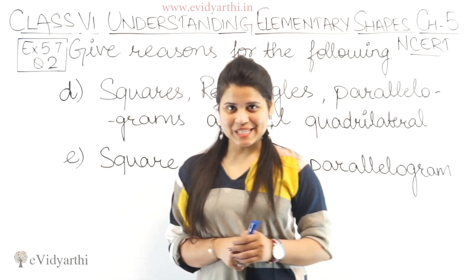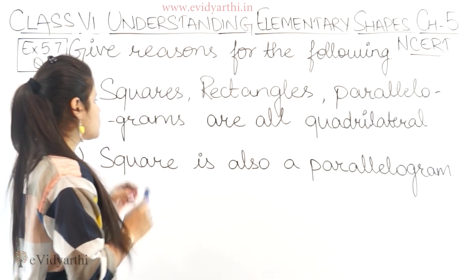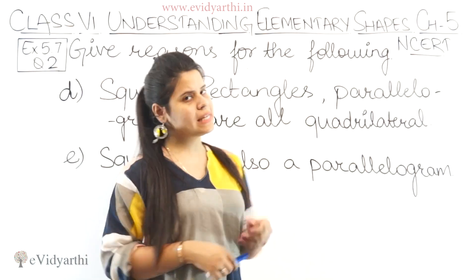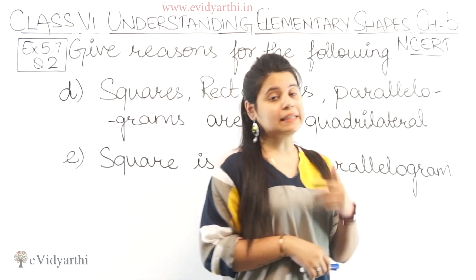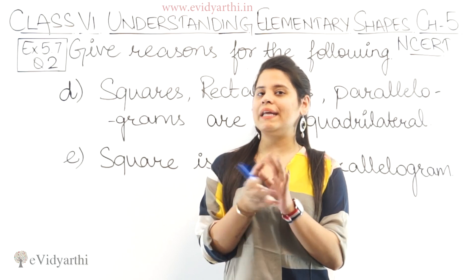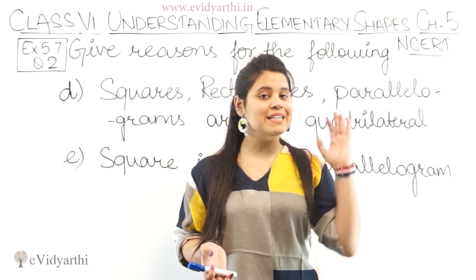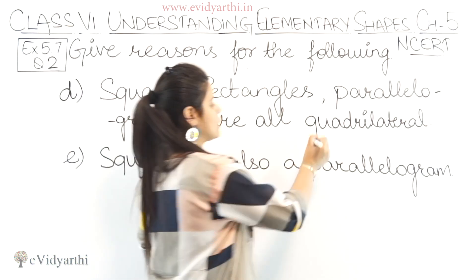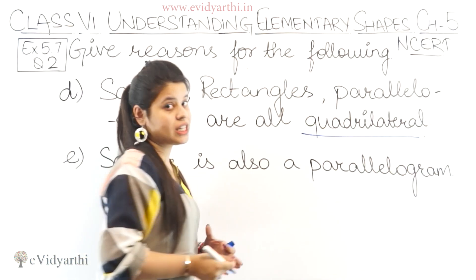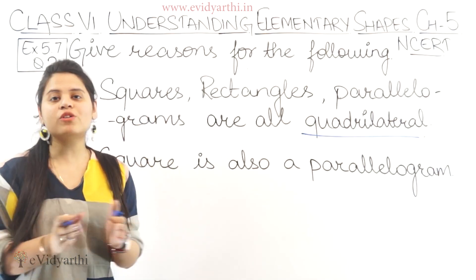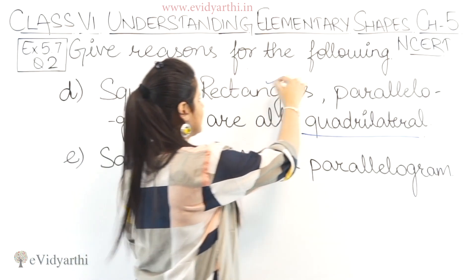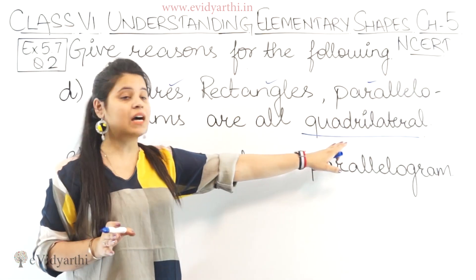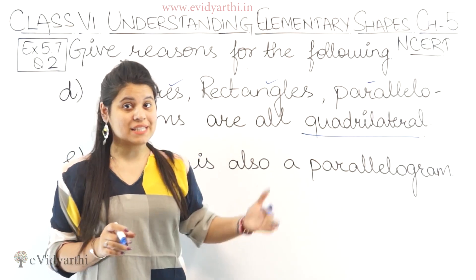Next: squares, rectangles, and parallelograms are all quadrilaterals. Yes, this is true — they are all quadrilaterals. The reason is that the definition of a quadrilateral is a figure with four sides. Squares, rectangles, and parallelograms are all four-sided figures, so that's why they are all quadrilaterals. The reason is: because they have four sides.